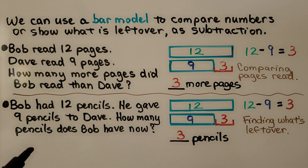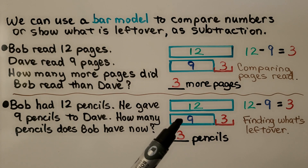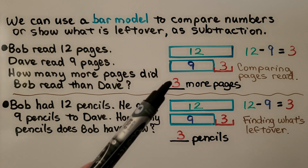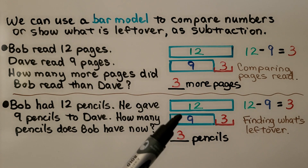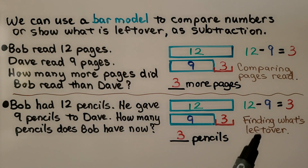Now in this problem, Bob had 12 pencils and gave 9 pencils to Dave. How many pencils does Bob have left? He had 12, gave away 9, so he has 3 left. Here we're finding what's left over after he gave some away. You'll notice we have the same answer — the same minuend and subtrahend — but in the first problem we compared, and in this one we're finding what's left over. Both are subtraction problems.